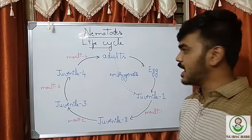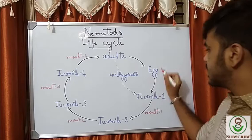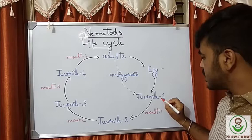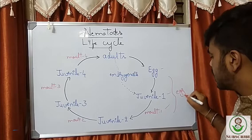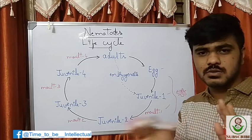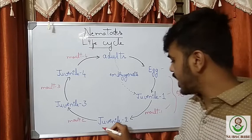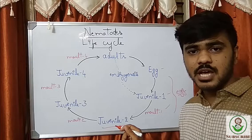Let's first see the life cycle. It has an egg stage, four juvenile stages, and one adult stage. A special thing is that the first juvenile stage and first molt occur within the egg itself. The adults lay the eggs in the soil, and there it develops into the first juvenile stage and undergoes the first molting. Then it comes out as juvenile 2, which is a very important stage in terms of plant parasites.